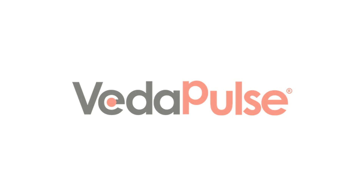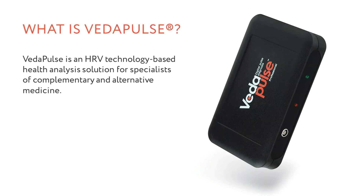Welcome to the presentation of the VetaPulse device, which is the first instrumental pulse analysis tool for specialists of complementary and alternative medicine. It allows estimating functions of particular organs and systems as well as the patient's health state in general. In this video you will learn about the main principles behind the system and its basic characteristics.